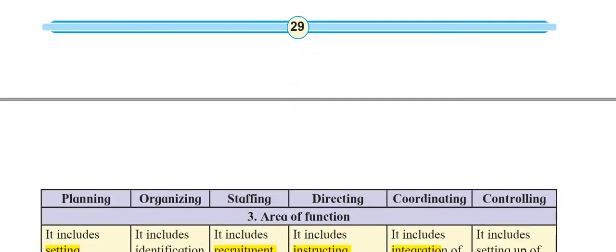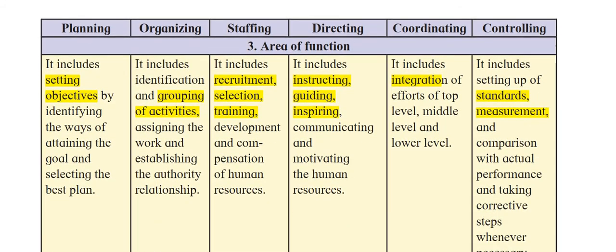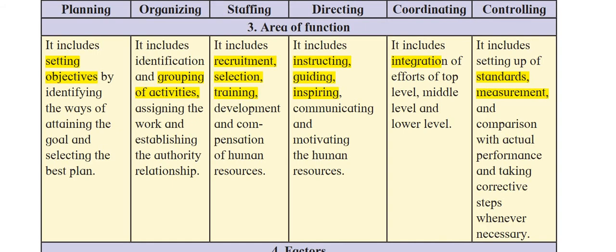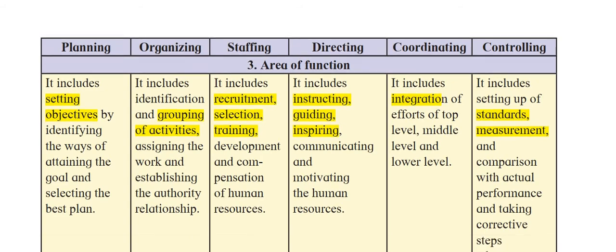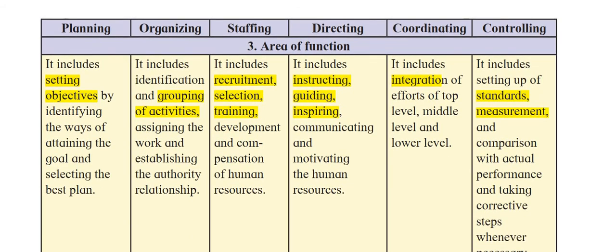The third point of differentiation is areas of function. Planning's area of function is setting objectives, identifying the ways of attaining the goal, and selecting the best plan — preparing a plan that will drive the growth of the company and its profits. For organizing, the area of function is identifying and grouping activities, assigning work, providing resources, and establishing authority relationships.